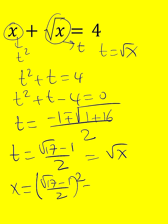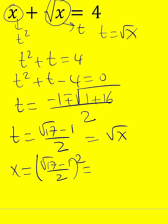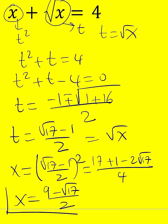And when you square this, you have to square the numerator, which is going to give you 17 plus 1 minus 2 root 17 all over 4. And if you simplify by 2, you get 9 minus root 17 divided by 2 for x. And that would be the solution.